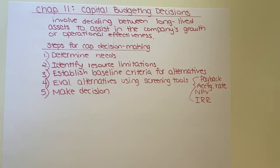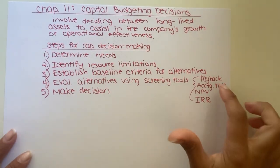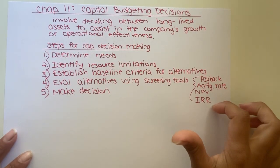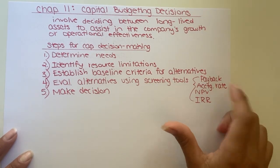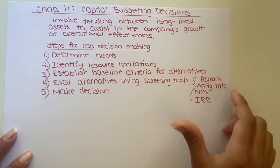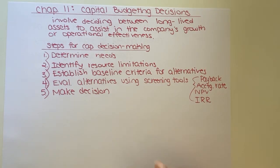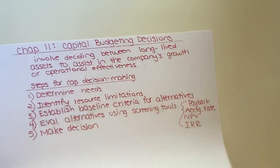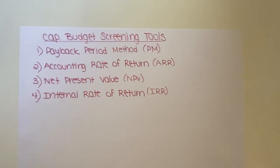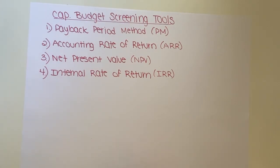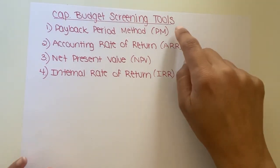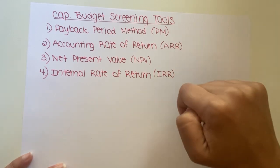Hello guys, we're back. In our last video, we talked about the four different methods we're going to use to rank our capital assets: the payback period, the accounting rate of return, NPV, and IRR. I have them all here written out with the abbreviations that your book uses.